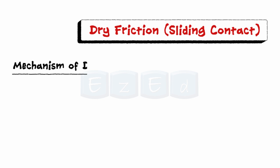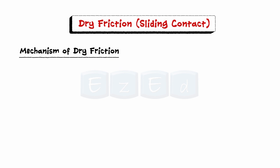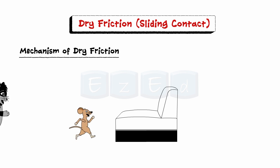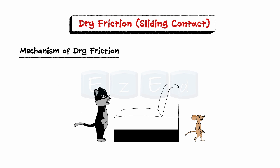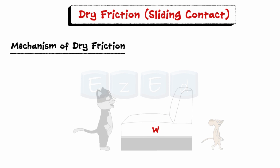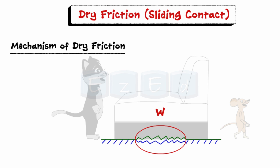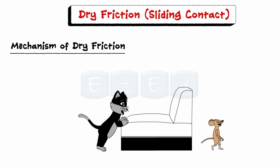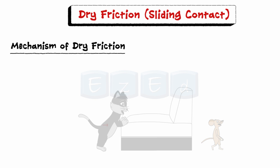We will now illustrate the mechanism of dry friction with the aid of a very simple example. Consider a mouse is being chased by a cat. In order to hide from the cat, the mouse hides behind a sofa. The sofa has weight W and is resting on a horizontal surface. We assume that the contacting surfaces have some roughness. The cat now starts pushing the sofa with a horizontal force P, which continuously increases from zero to a value sufficient to move the sofa and give it an appreciable velocity.